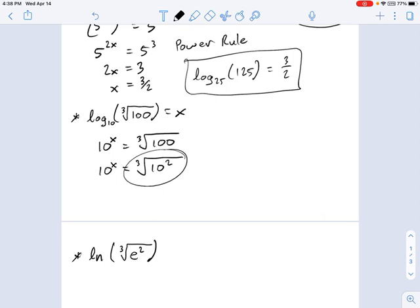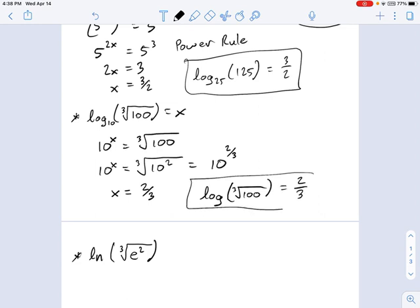The cubed root of 10 squared can also be written this way, 10 to the two thirds. Okay. This is the way radical signs can be rewritten using fraction exponents. So now if 10 to the x equals 10 to the two thirds, that means x equals two thirds. And what that means is the logarithm of the cubed root of 100 equals two thirds. That's the answer to this question.